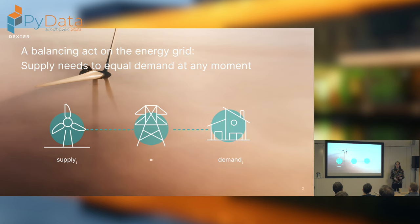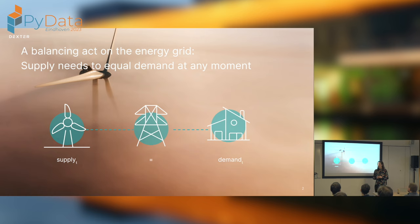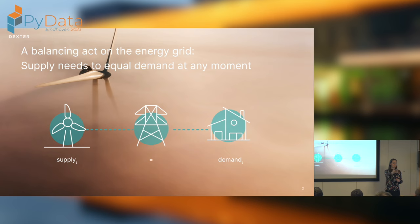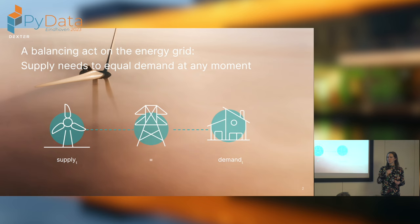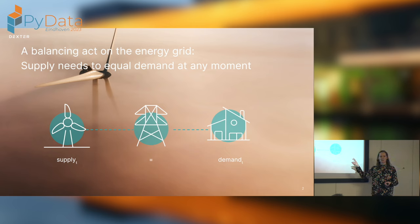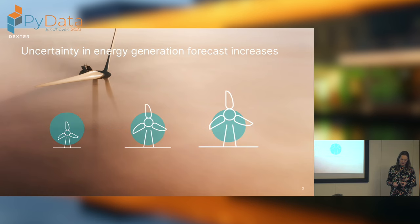Renewable energy, for example a wind turbine, delivers energy to the electricity grid. And the electricity grid always needs to be balanced. So if your laptop is empty and you want to plug it in, the electricity that you take out of the grid at that exact moment has to go into the grid somewhere — for example, generated by a wind turbine. However, it's quite challenging to balance this grid all the time, and it becomes even more challenging because wind energy is uncertain.